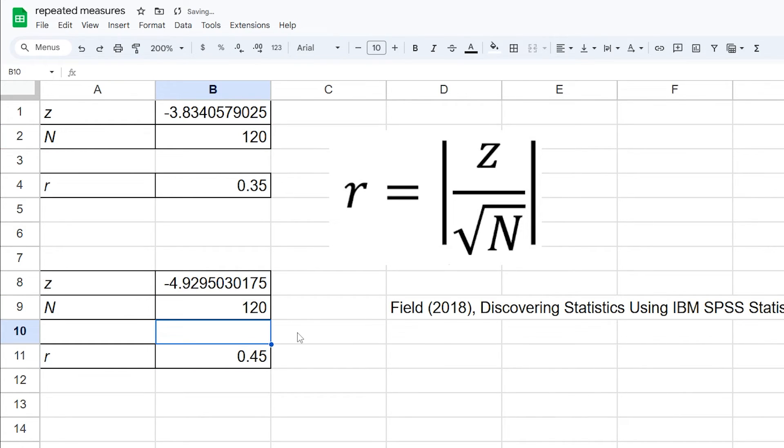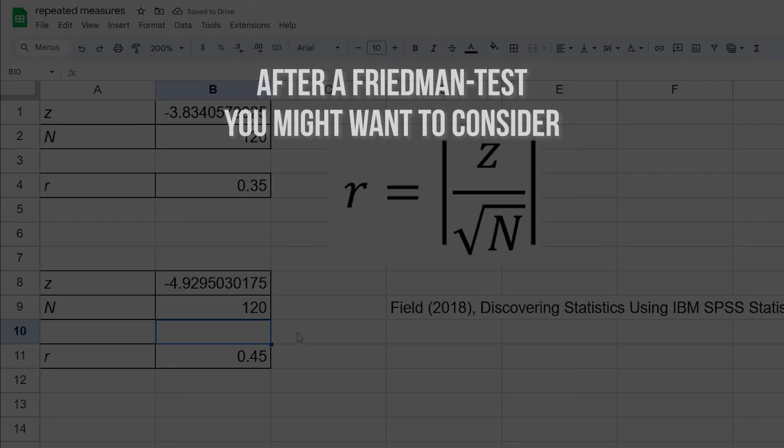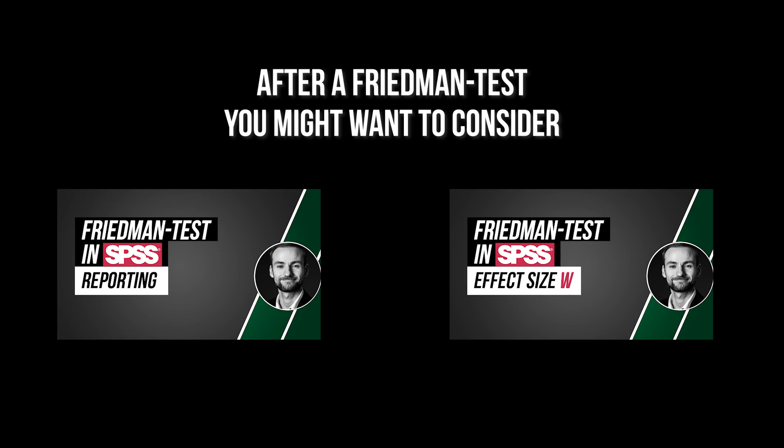If I use the number of pairs times 2 for N, my effect sizes will be 0.35 and 0.45 accordingly. When you're done, you have to write up the results. The video that appears now will show you how.